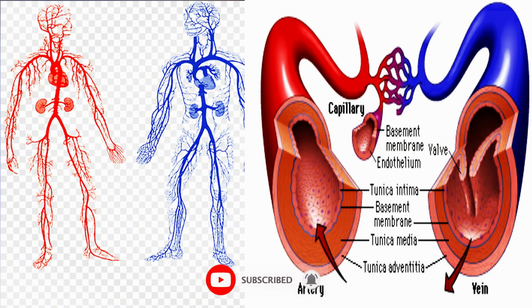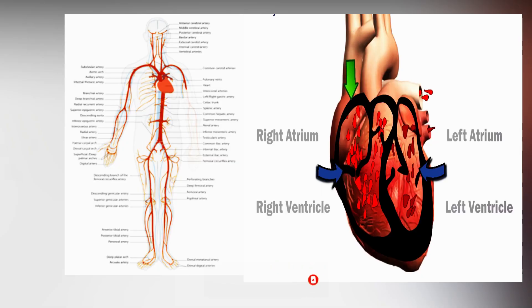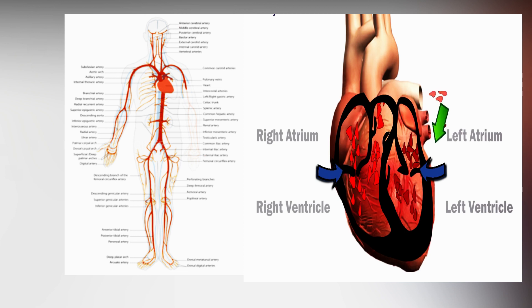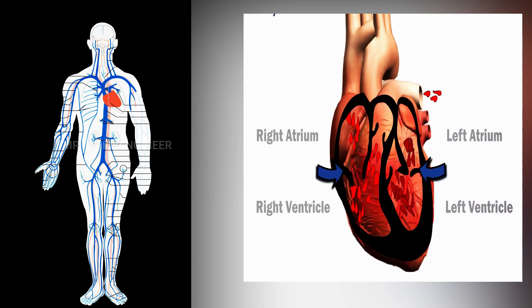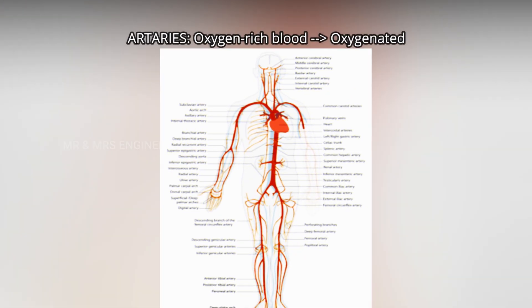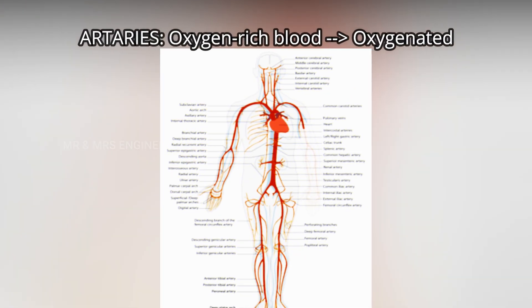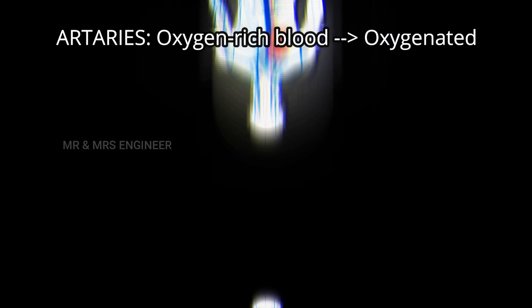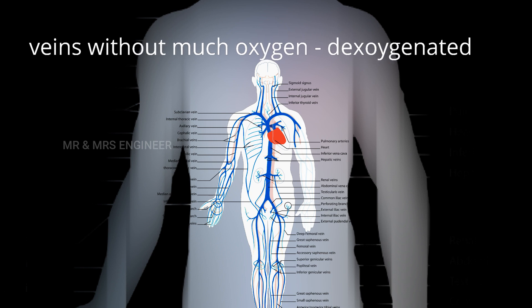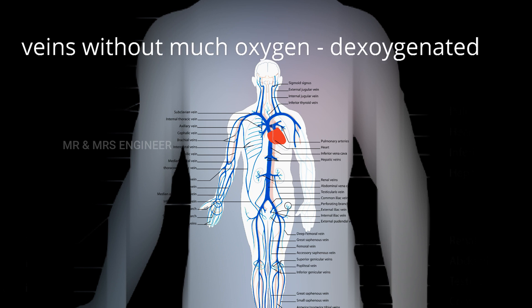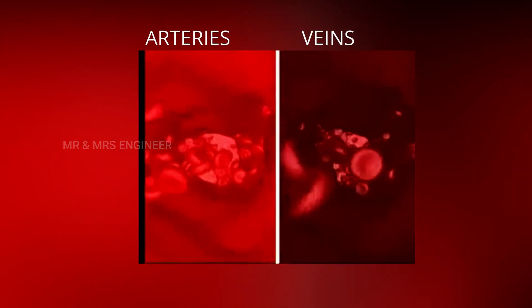Now, the veins are the same as the arteries. The arteries carry oxygen. The veins are not oxygen, or low oxygen. Let's say this is de-oxygenated blood. In our veins, hemoglobin is not carrying oxygen.